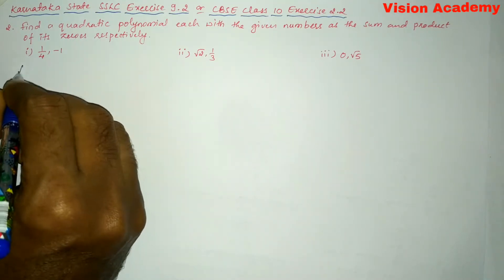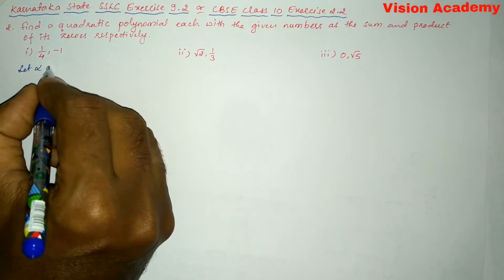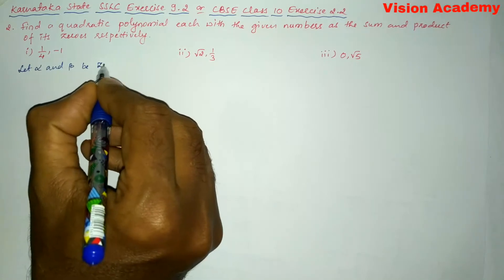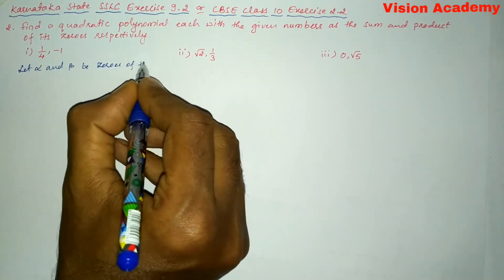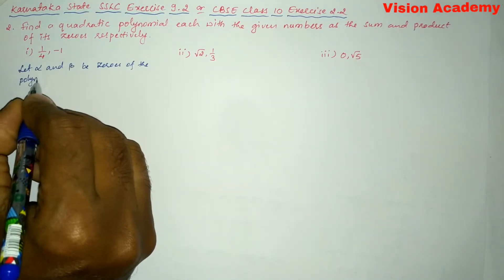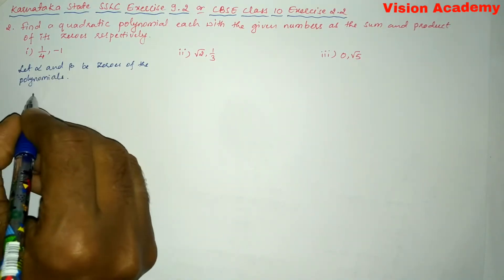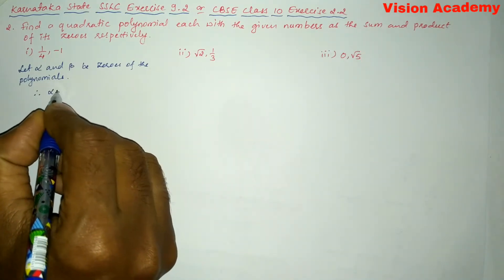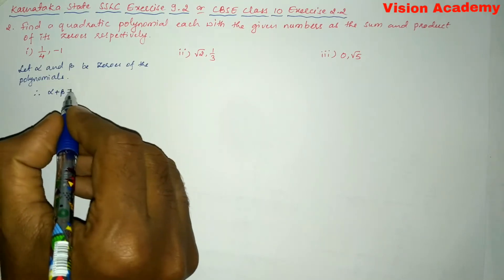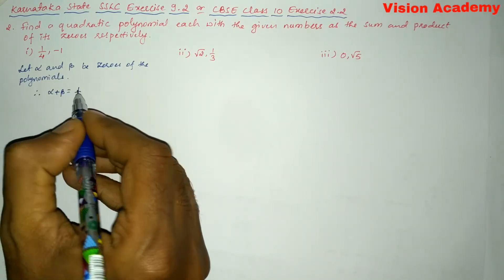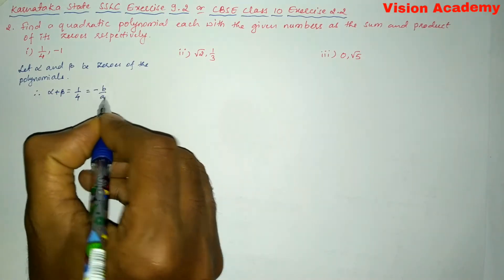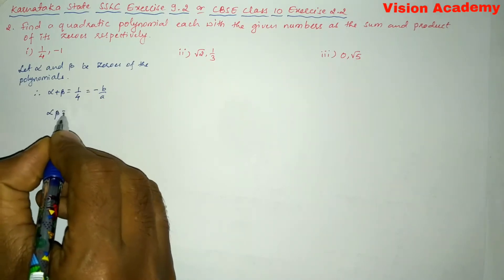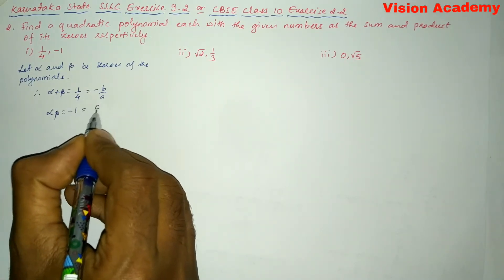Let alpha and beta be the zeros of the polynomial. Therefore, as per the question, the sum is alpha plus beta, which is given as one by four, which is nothing but minus B by A. Now, let us write the product: alpha into beta is equal to minus one, which is equal to C by A.